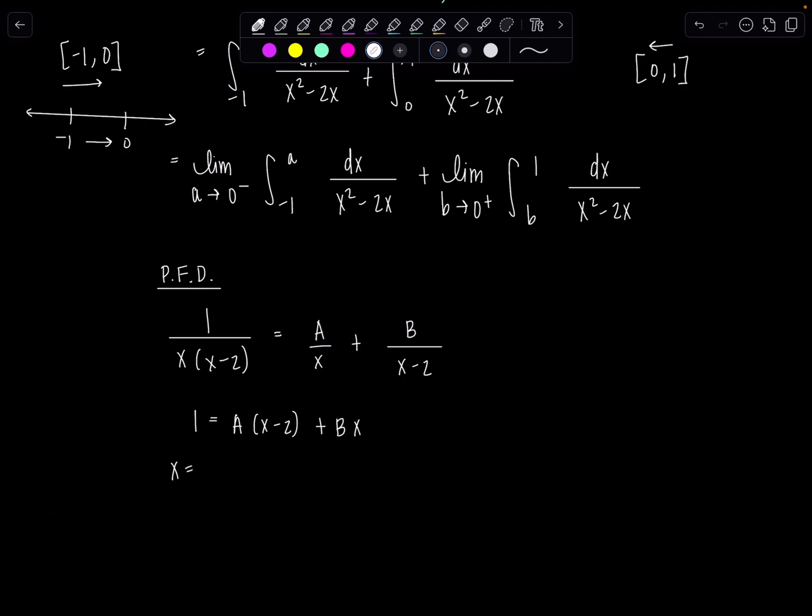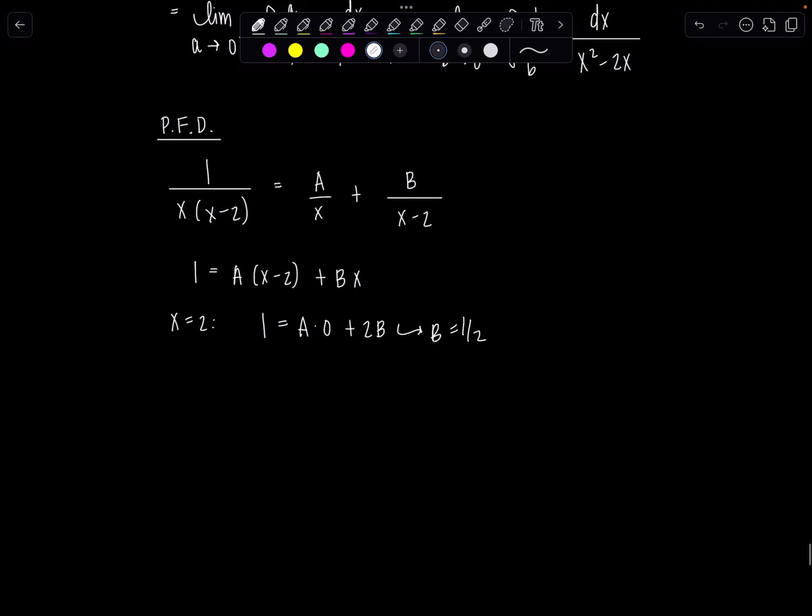Let me sub in x equals two. I'll get one equals a times zero plus two b. So b is a half. And then if I sub in x is zero, I have one equals a times negative two plus b times zero. So a is negative one half.